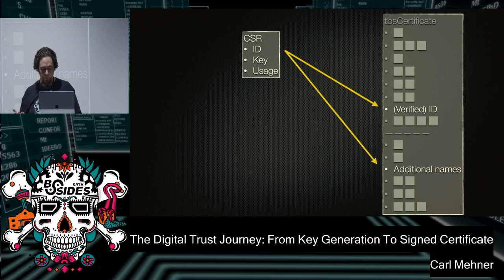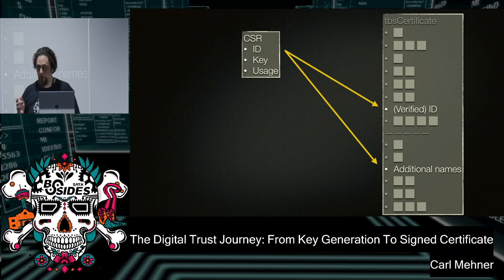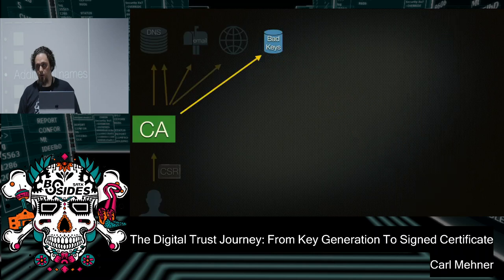Not only does the CA need to verify the identity, it also needs to verify the key. It has to make sure that the key's algorithm and key strength is safe enough and strong enough for use on the internet. For example, you can have a 4096-bit RSA key — which is really strong — but you can't have a 1024-bit RSA key. You can use one of the elliptic curves that NIST has defined, P256, but you can't use one of the newer, arguably more secure curves like X25519.